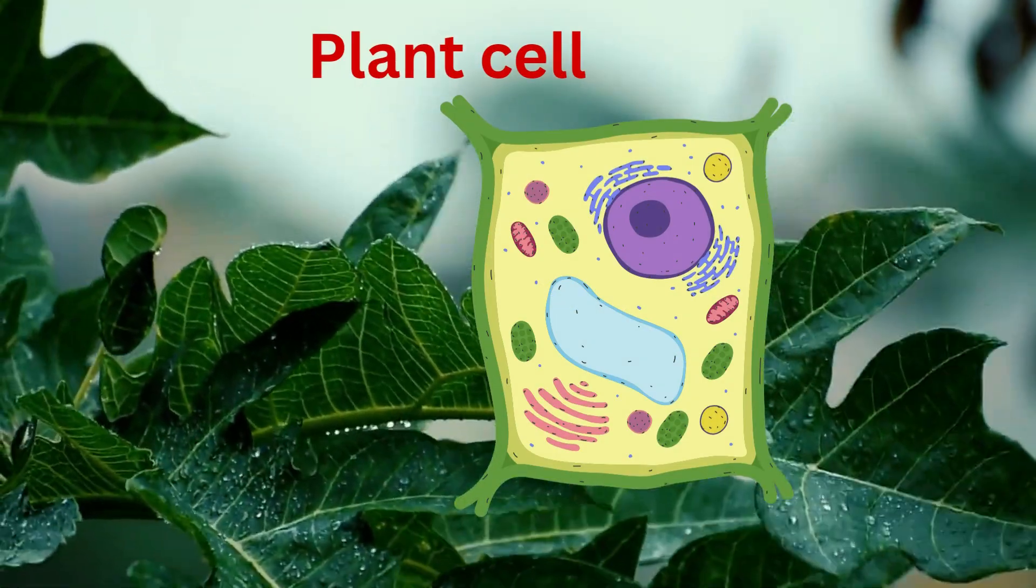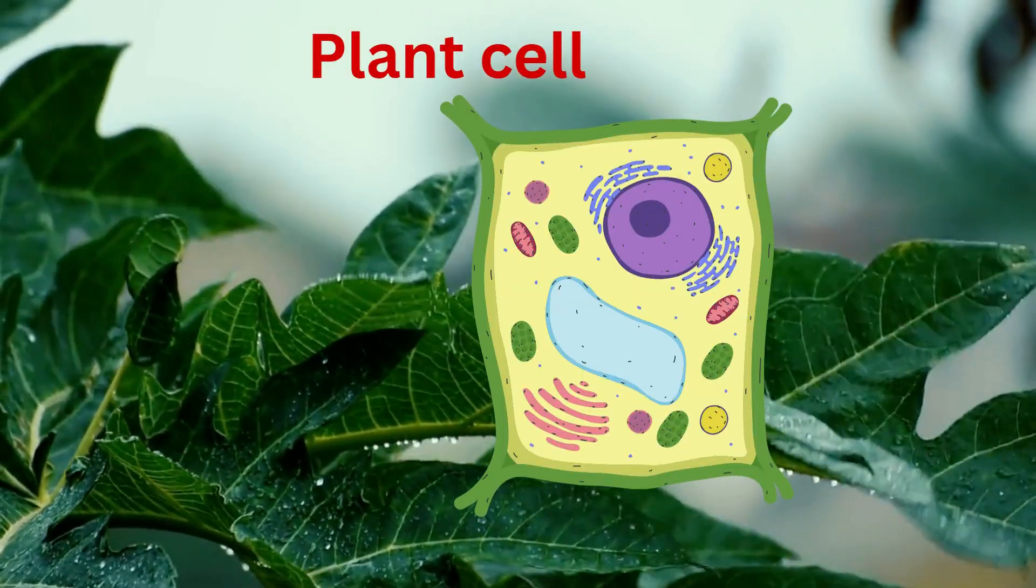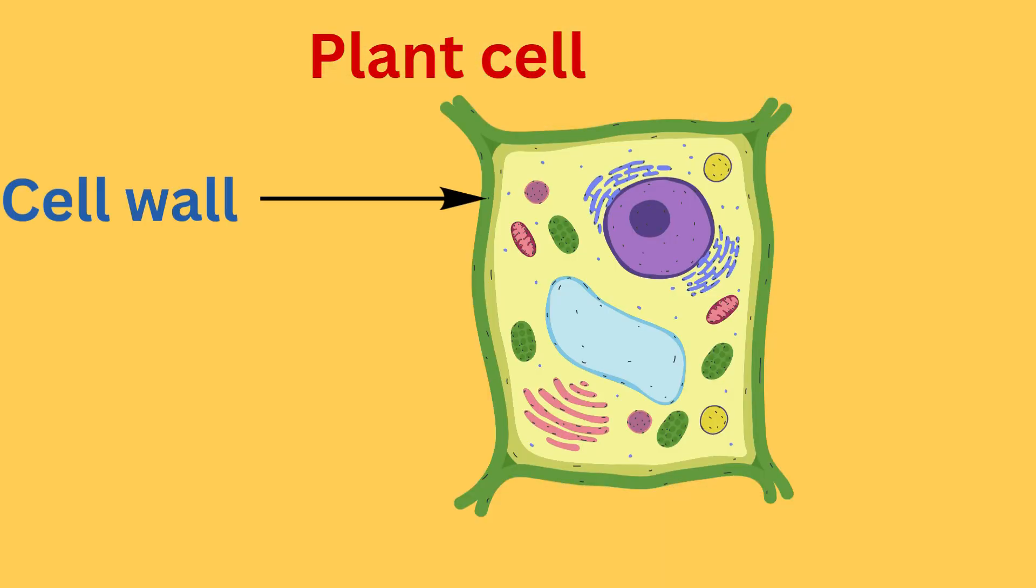Some organelles are only present in plant cells. What are they? They are cell wall, chloroplasts, and large vacuoles. Cell walls are rigid layers outside the membrane. They give shape and support to the cell.